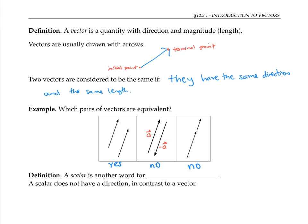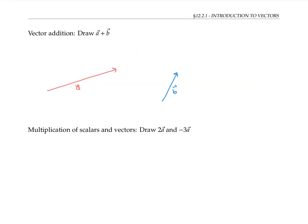A scalar is another word for a real number, like five or pi. A scalar does not have a direction, in contrast to a vector, but it does have a size or magnitude. Now that we've defined vectors, we can talk about adding them together.